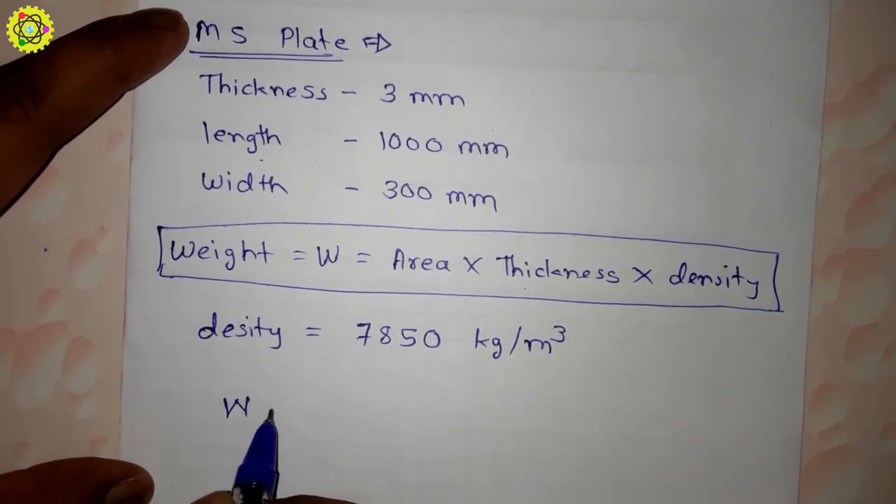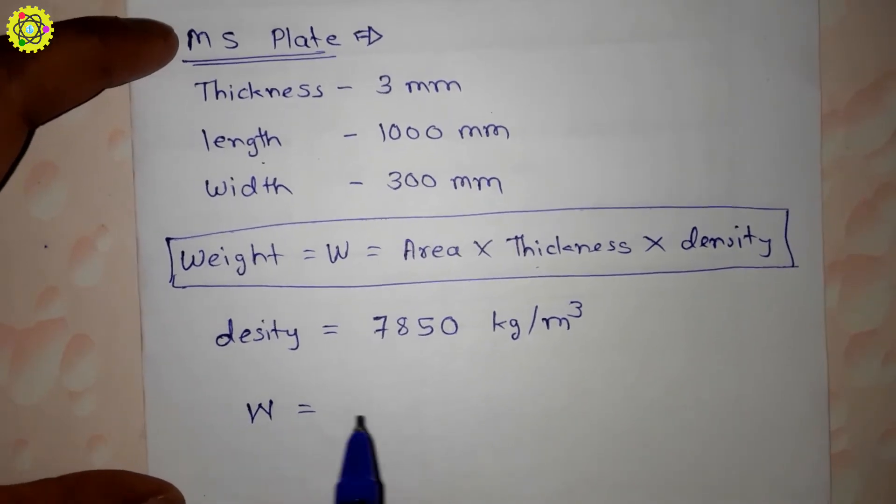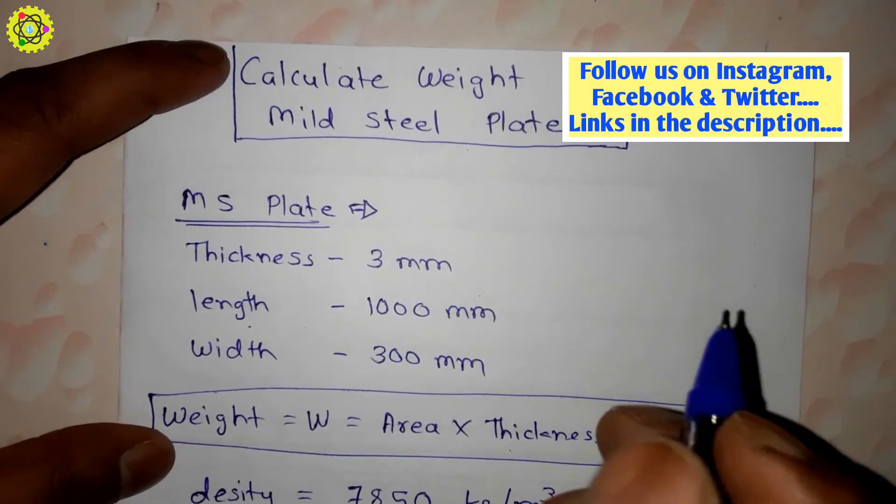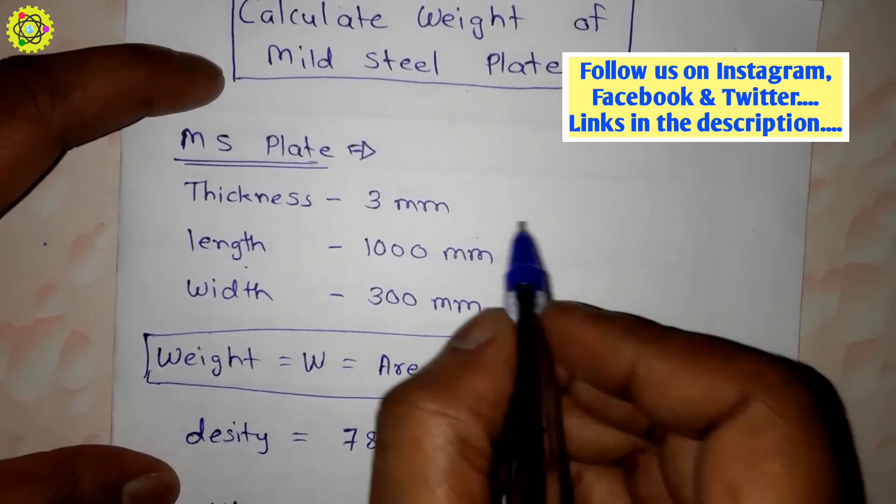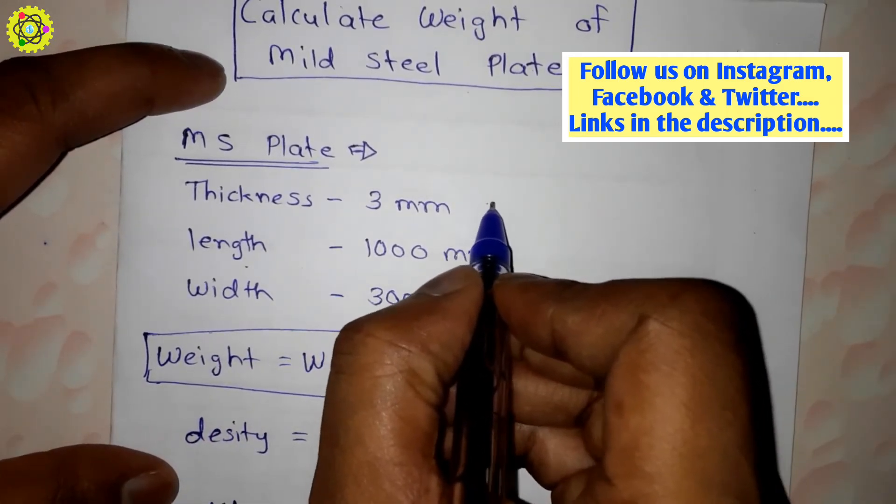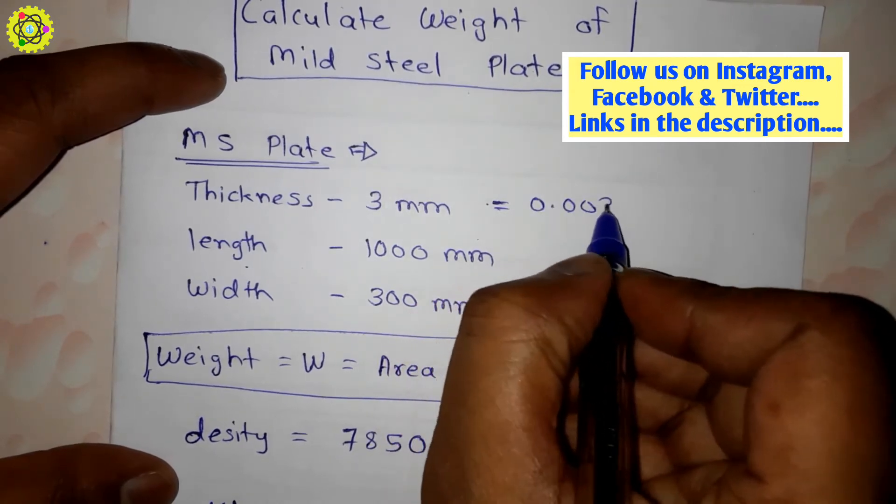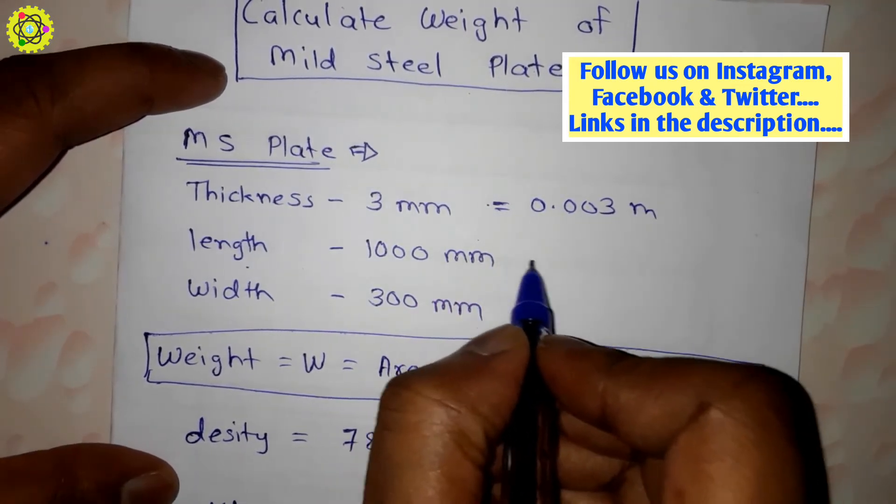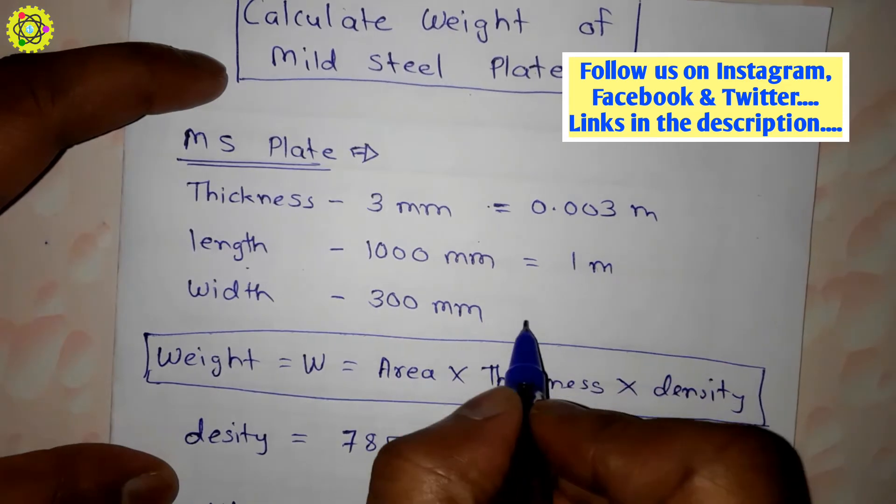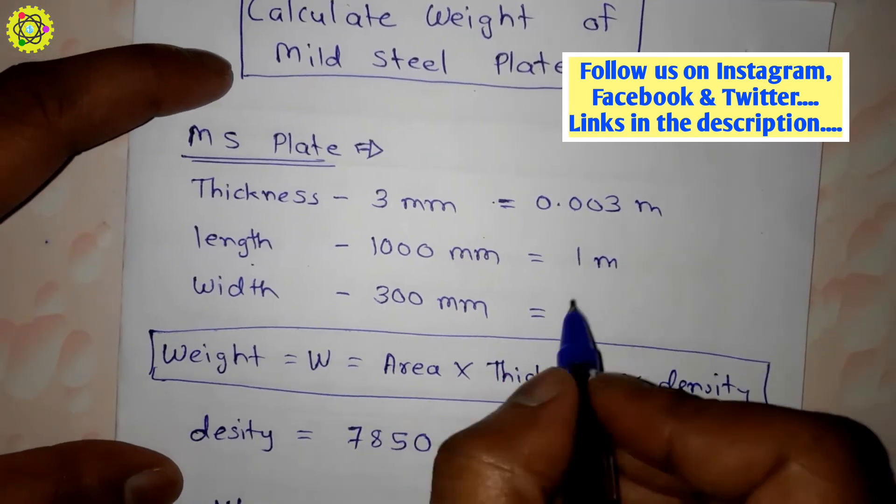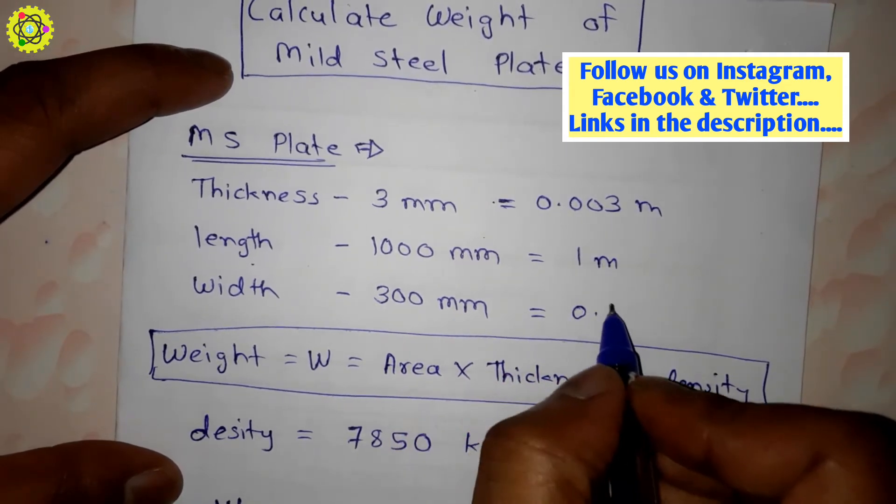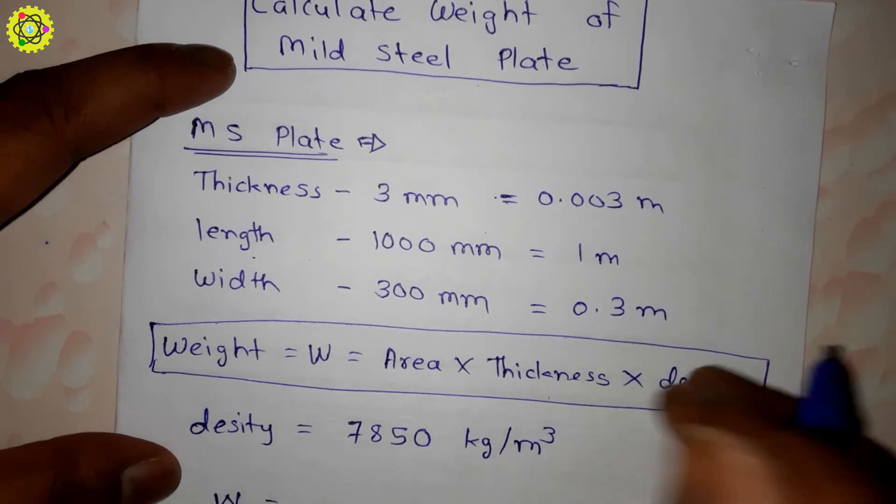We need all our terms in meters. Thickness is equal to 0.003 meter, length is 1 meter, and width is 0.3 meter.